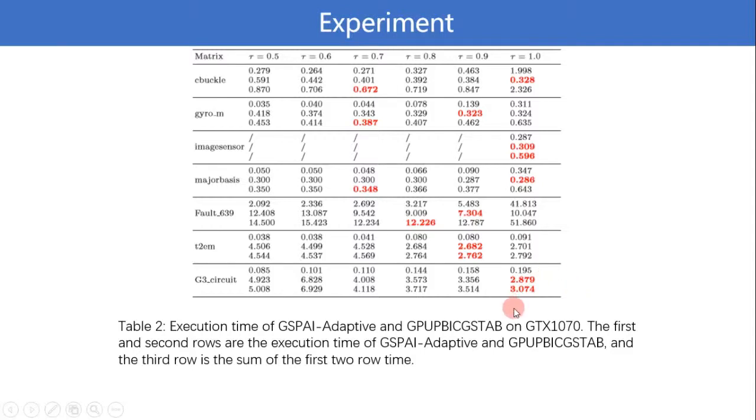First, as the tau increases, it in general decreases, although the execution time of GSPAI-Adaptive increases. Then, beyond a certain threshold, the increase of tau can have a reverse effect on it. In all our test cases, a large tau is almost well chosen.